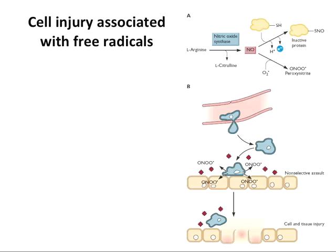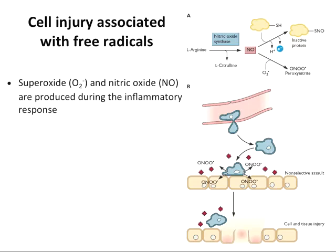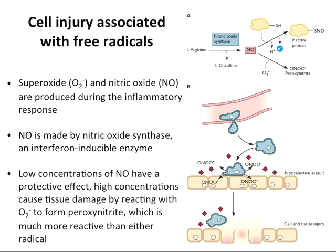Free radicals — nitric oxide made by the interferon-inducible nitric oxide synthase, and superoxide — can also cause cell damage during virus infection. Macrophages, monocytes, and NK cells typically go to infected areas and release these radicals, killing cells. Low concentrations have a protective effect by removing infected cells, but higher concentrations cause tissue damage. Mice lacking this enzyme show less pathology in response to certain virus infections.